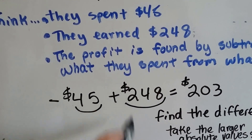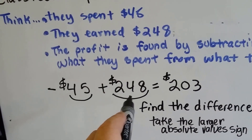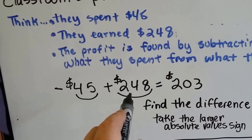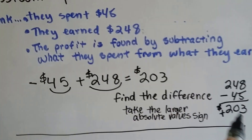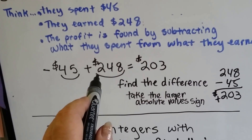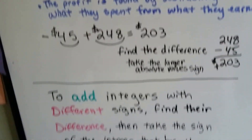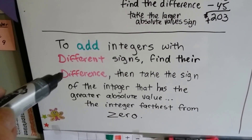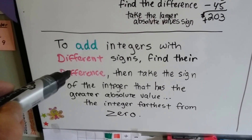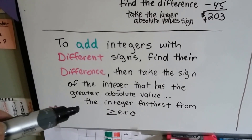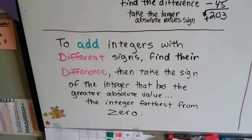Which number is farther from zero — 45 or 248? Well, 248 is way farther from zero than 45, and it's a positive 248, so our answer is positive $203. We found the difference and took the sign of the one farthest from zero. To add integers with different signs: find their difference, then take the sign of the integer with the greatest absolute value — the one farthest from zero.